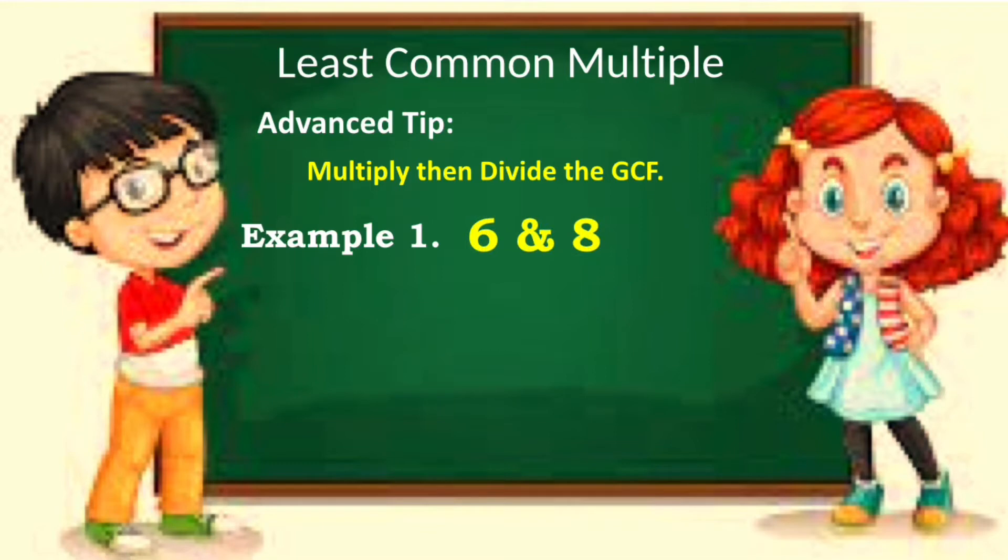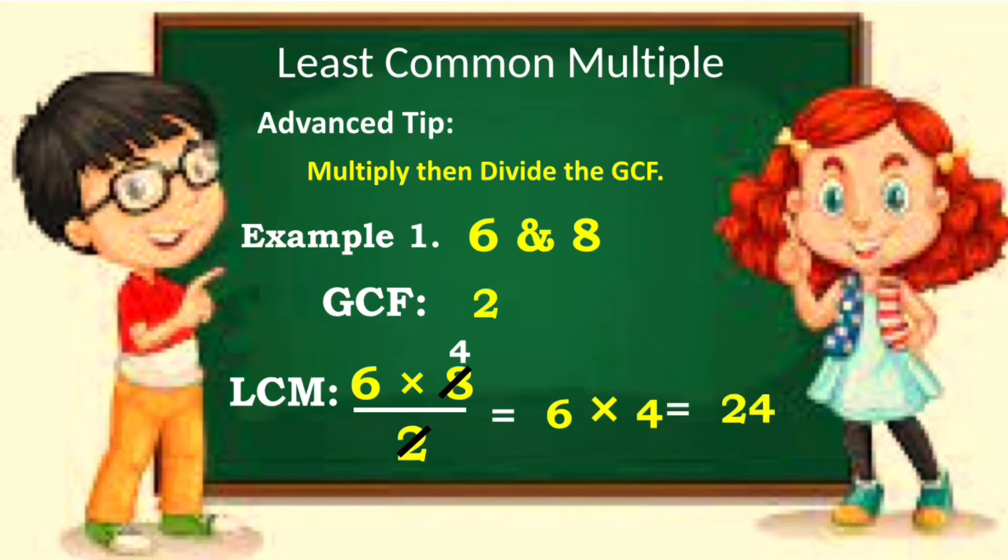Subtracting 8 and 6, the GCF is 2. Now solve the LCM. Multiply the given numbers, 6 times 8, then divide the GCF of 2. 8 divided by 2 is 4, so the remaining numbers are 6 times 4, that is equal to 24.